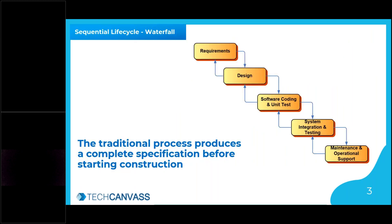So typically, something that we all know — whoever is working as a business analyst or wants to become one — we know what a waterfall model is. That's been there since ages. The typical way of gathering requirements in a waterfall methodology is: as a business analyst, we'd spend three to four months with customers, go to their location, talk to them, gather requirements, and spend a couple of months writing pages of documentation — business requirement documents, functional specifications, BRDs, FRDs, etc. — and get them signed off from the customer.